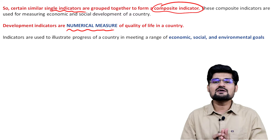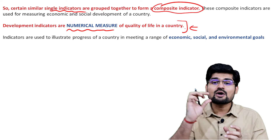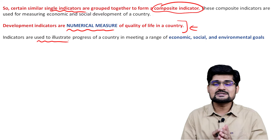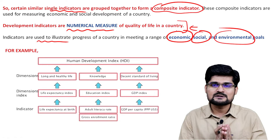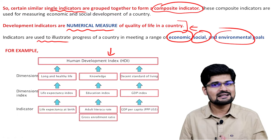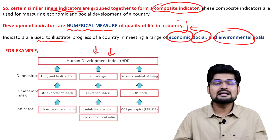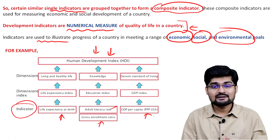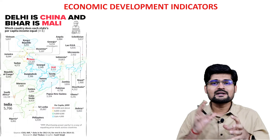Development indicators are a numerical measure of the quality of life in a country — mostly about quality of life, but expressed numerically. We rank them, order them, take percentages — that's where we talk about both quantity and quality. Indicators are understood under the headings of economic, social, and environmental. One example of a composite indicator is HDI, the Human Development Index, which combines life expectancy at birth, adult literacy, gross enrollment ratio, and GDP per capita.